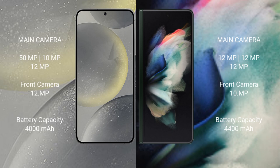Samsung Galaxy S24 features a real-set triple camera setup: 15MP plus 12MP plus 12MP, and a front camera of 12MP.